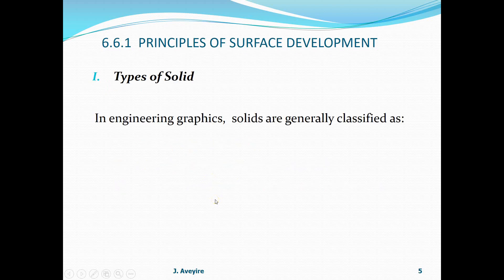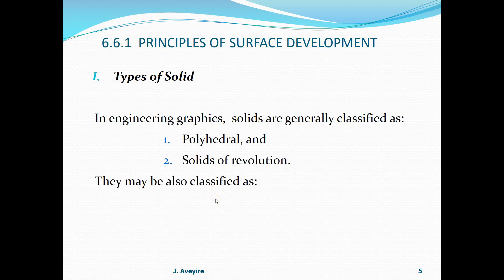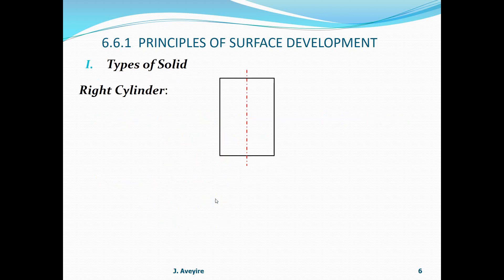Types of solid. In engineering graphics, solids are generally classified as: 1. polyhedral, and 2. solids of revolution. They may also be classified as 1. right solids, or b. oblique solids.